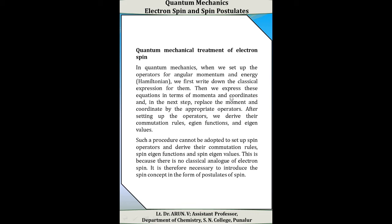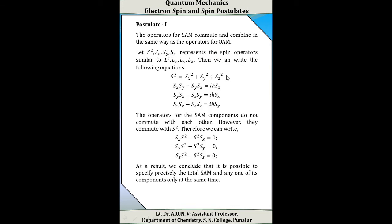Therefore, it is necessary to introduce the spin concept in the form of postulates. The first postulate states: the operators for spin angular momentum commute and combine in the same way as the operators of orbital angular momentum. Similar to orbital angular momentum, the square of spin angular momentum is represented by S², and its x, y, z components by S_x, S_y, S_z. Therefore, S² = S_x² + S_y² + S_z².